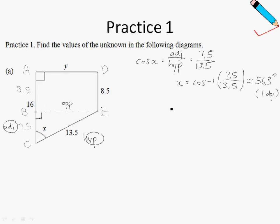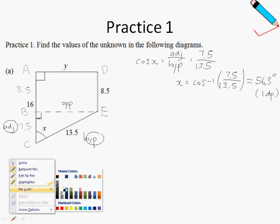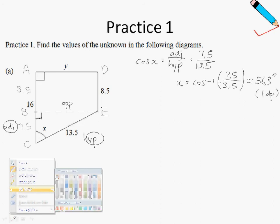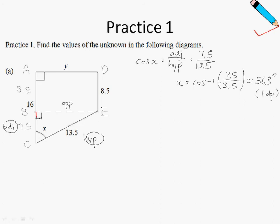Now moving on, let us find Y. We will find the length Y by using Pythagoras theorem on this triangle over here. So let me highlight the triangle to make it clearer. We look at triangle BCE. For triangle BCE, this is my Y, and I can find Y using Pythagoras theorem.